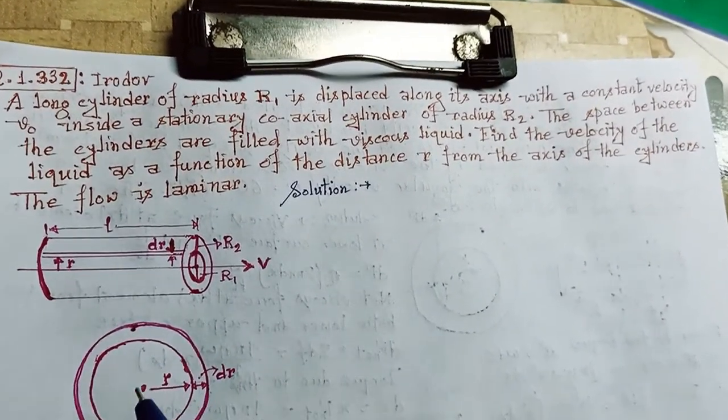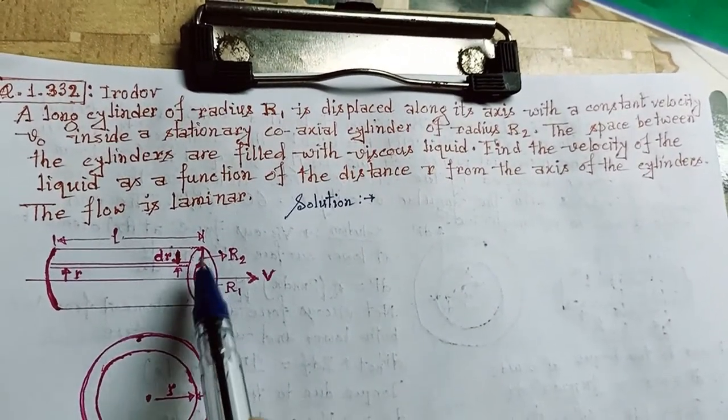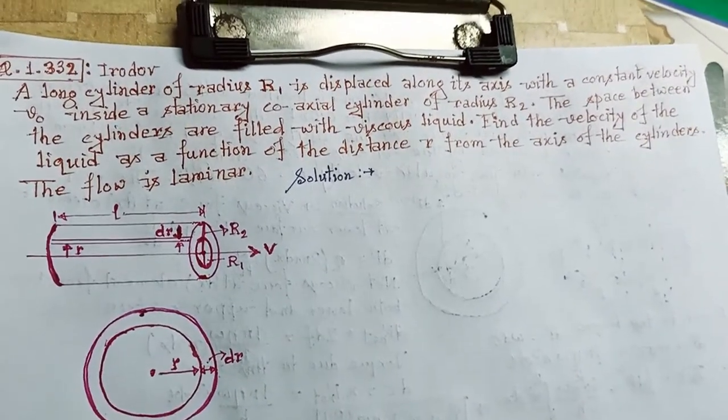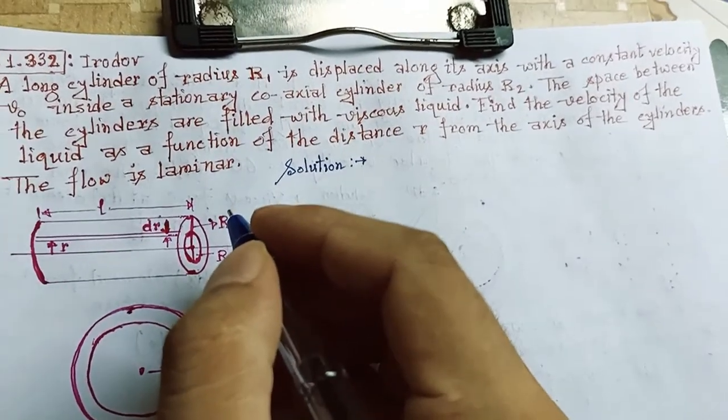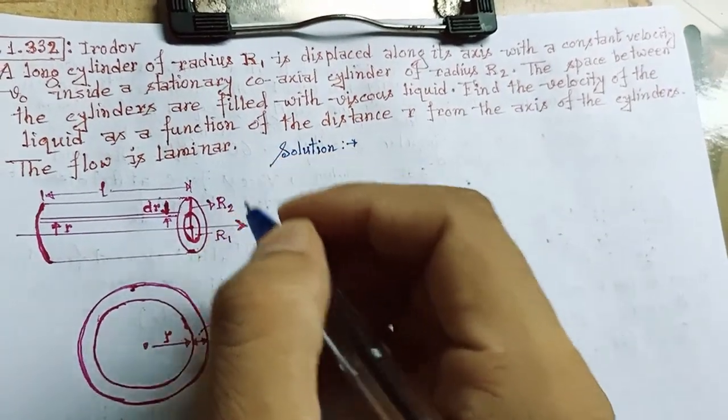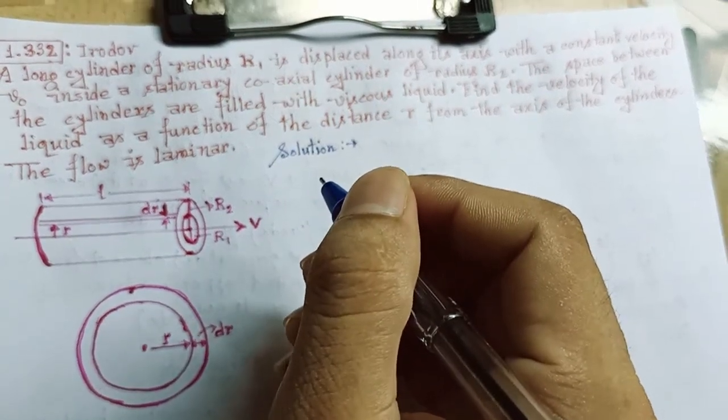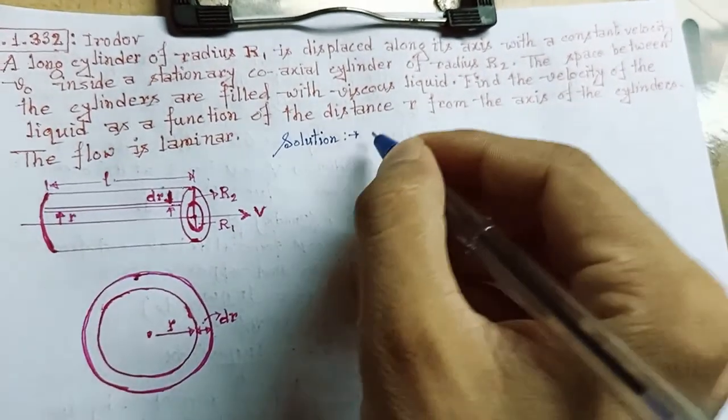The required diagram is drawn. These are the side view and top view of the cylinders. From this diagram, the viscous force on the differential element of liquid of radius r.